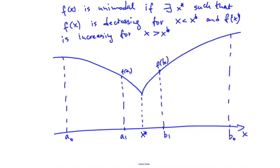What can we say about where the minimizer is located? If it were to the right of b1, then f(a1) < f(b1) would mean the function is increasing between a1 and b1 — but the function only increases for x greater than x*. So the minimizer cannot be to the right of b1; it must be somewhere to the left of b1, i.e., within the interval [a0, b1]. This is our new interval of uncertainty.